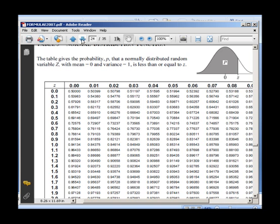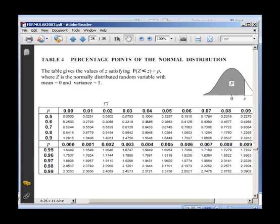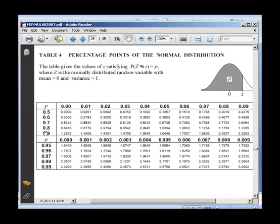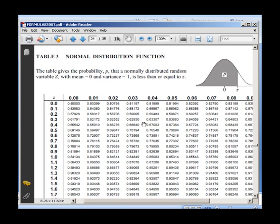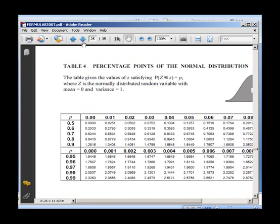Let's have a look at table 4. As you can see here, p is on the outside and the values on the inside of the table are z values. Both of these tables are useful depending on whether you're calculating probability, that's table 3, or if probability is given to you and you're working out a data value, then you use table 4.